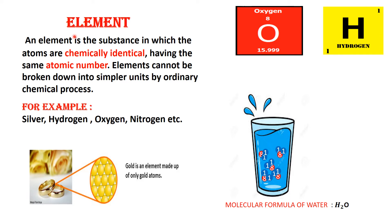Students, there are 118 elements out of which 94 occur naturally on earth and the rest are prepared artificially. An element is the substance in which the atoms are chemically identical having the same atomic number. Chemically identical means that the atoms have the same chemical properties and have the same atomic number means that the number of protons of the atoms are same.